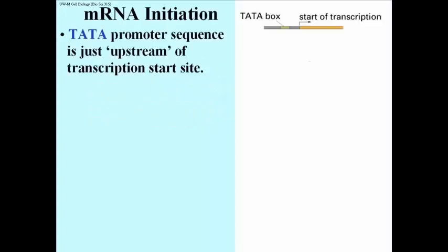This slide summarizes the complex steps of transcription initiation at eukaryotic promoters. Most eukaryotic promoters include something called a TATA box, with a sequence TATAAA, very similar to the Pribnow box in E. coli. We say the promoter is upstream of the transcription start site, by convention to the left of the transcription start site.